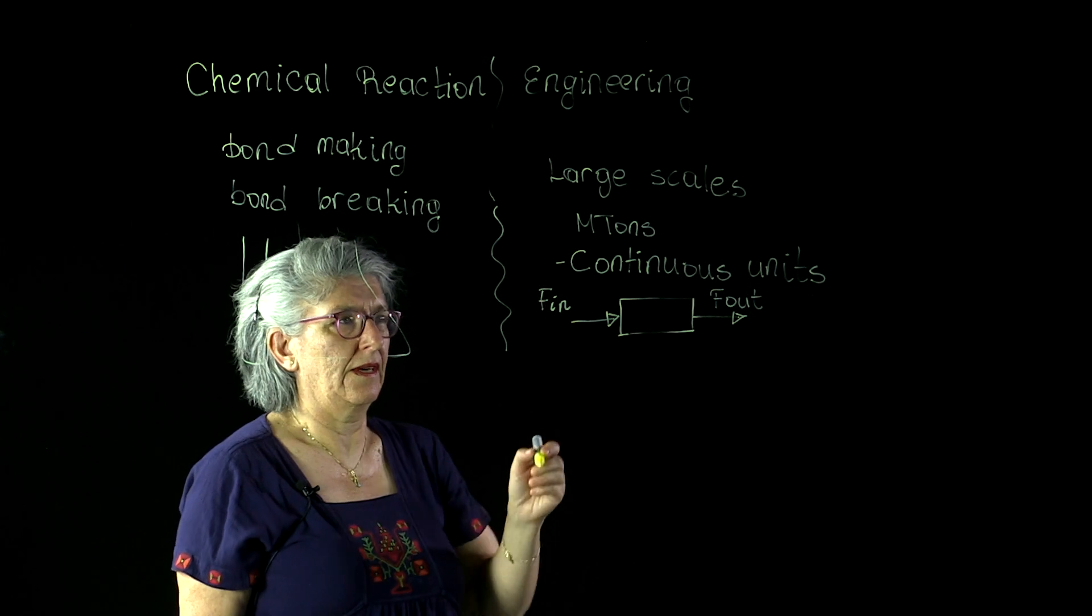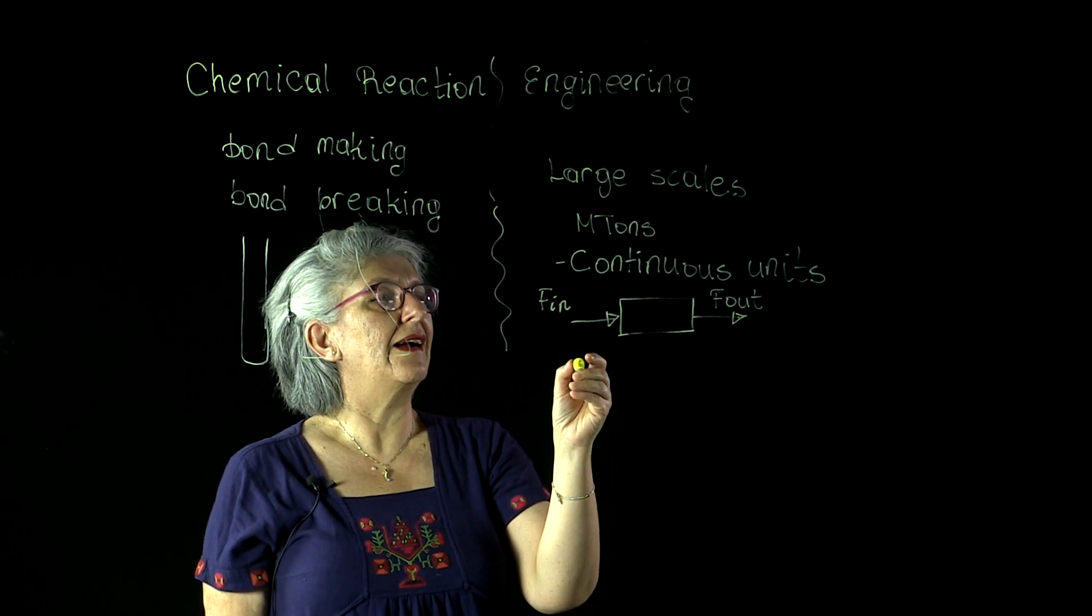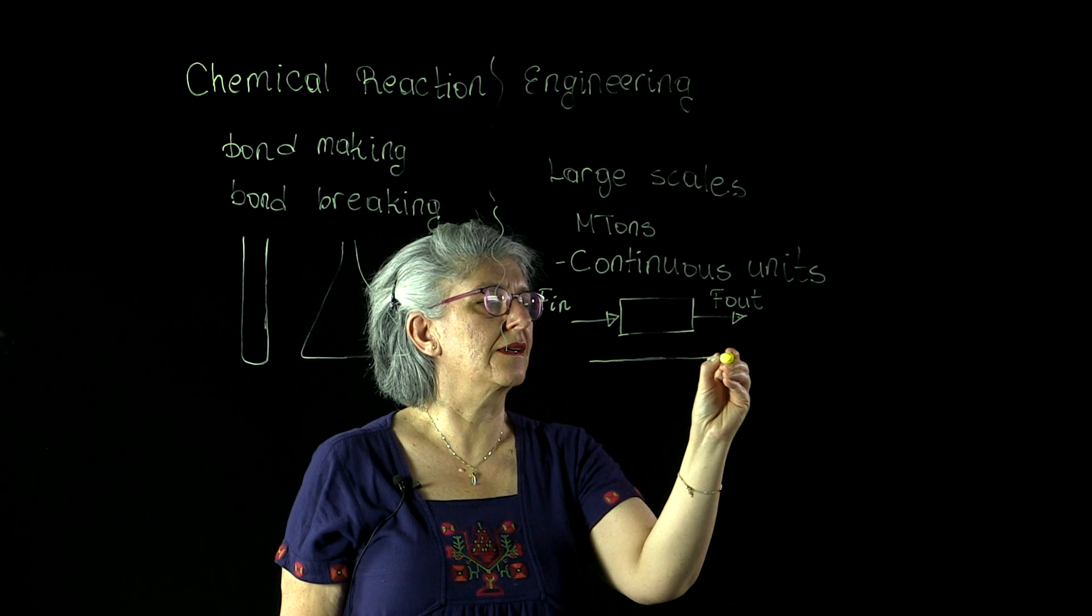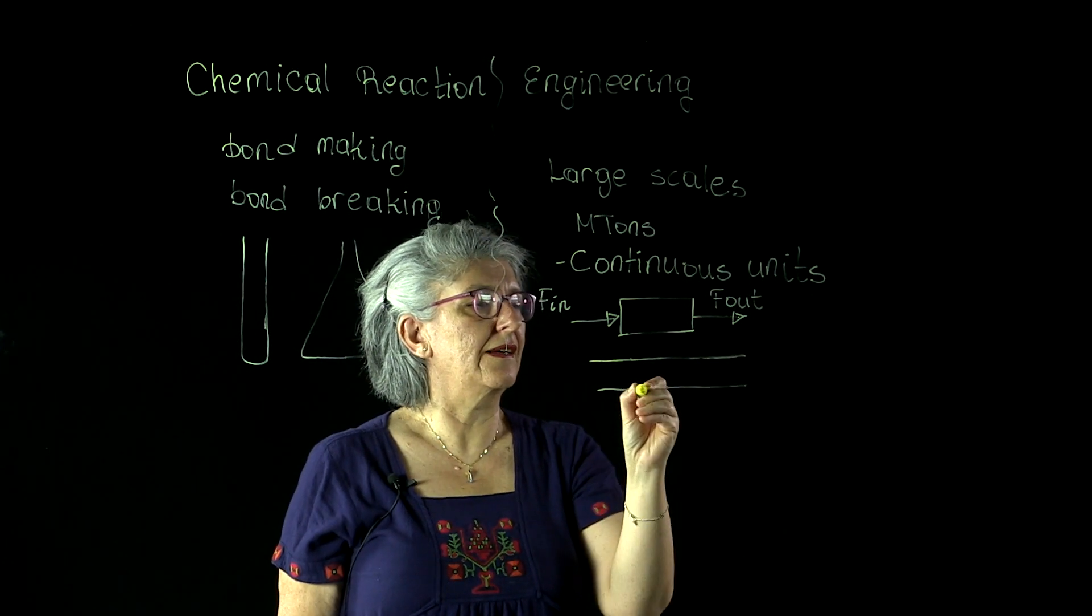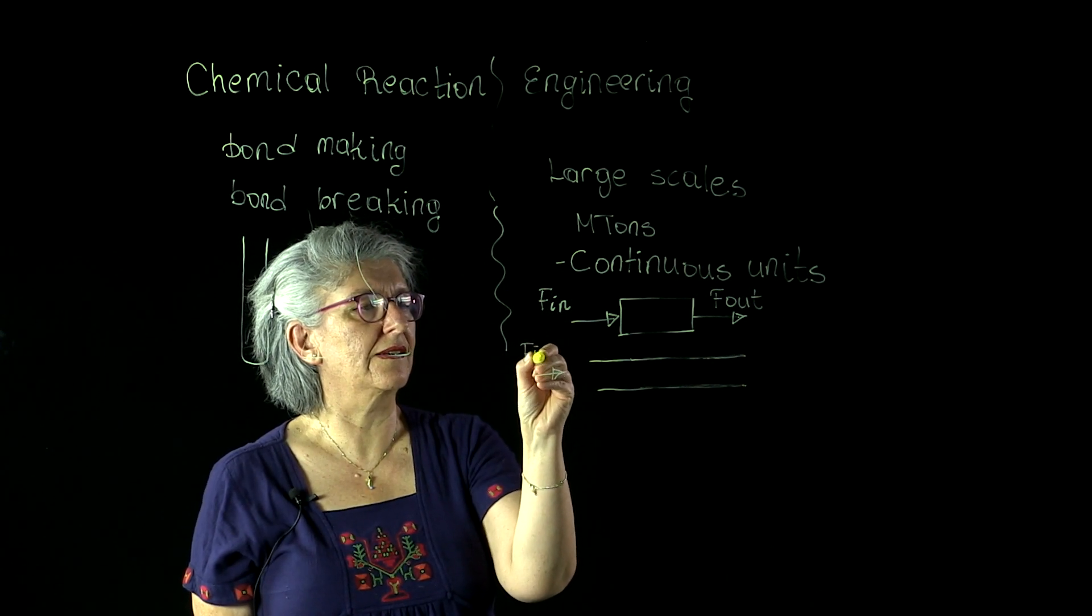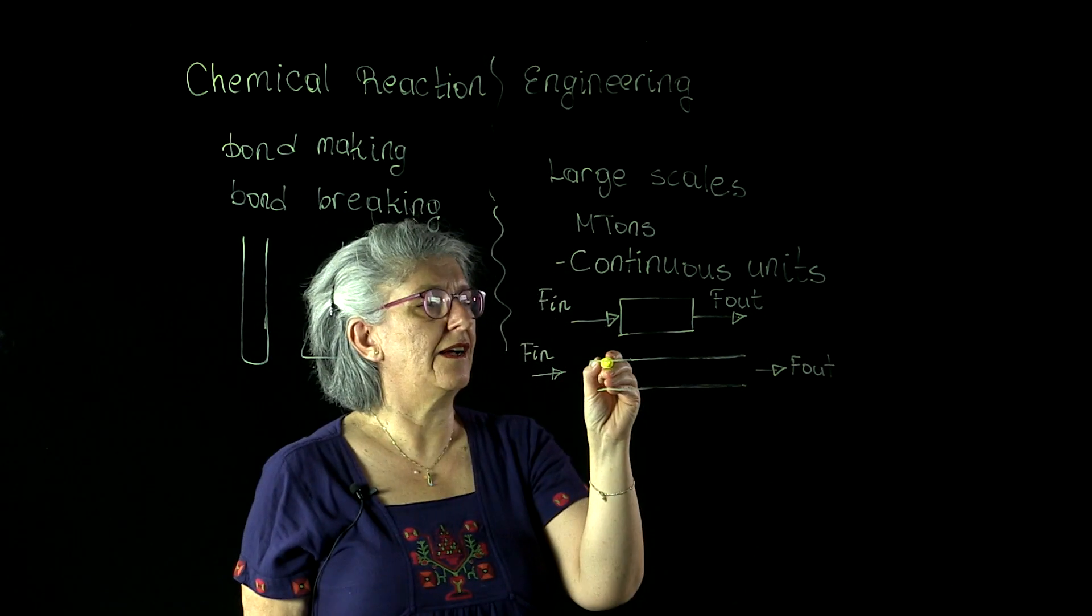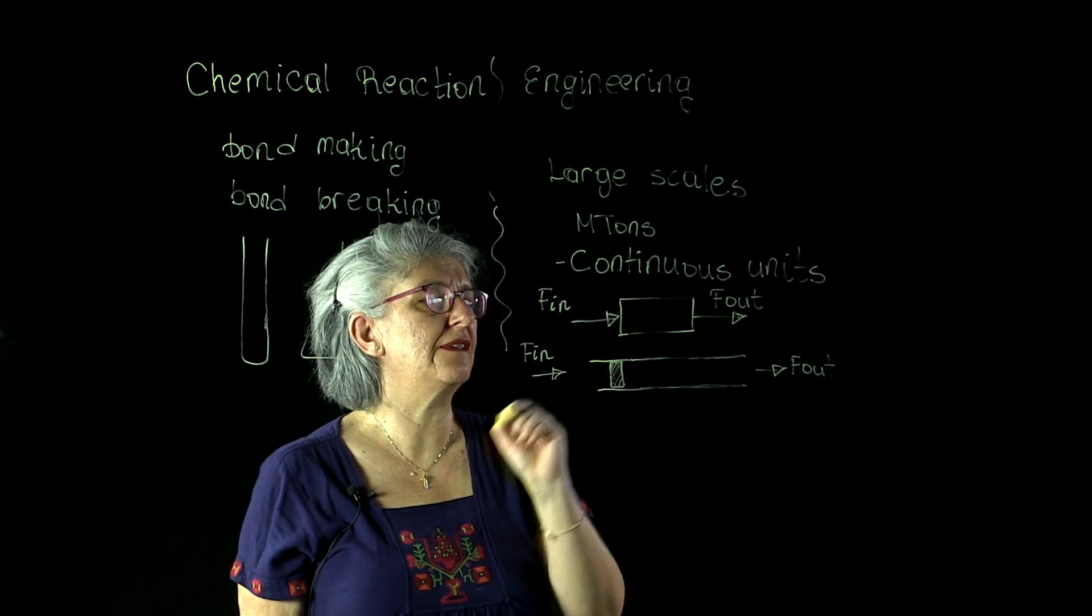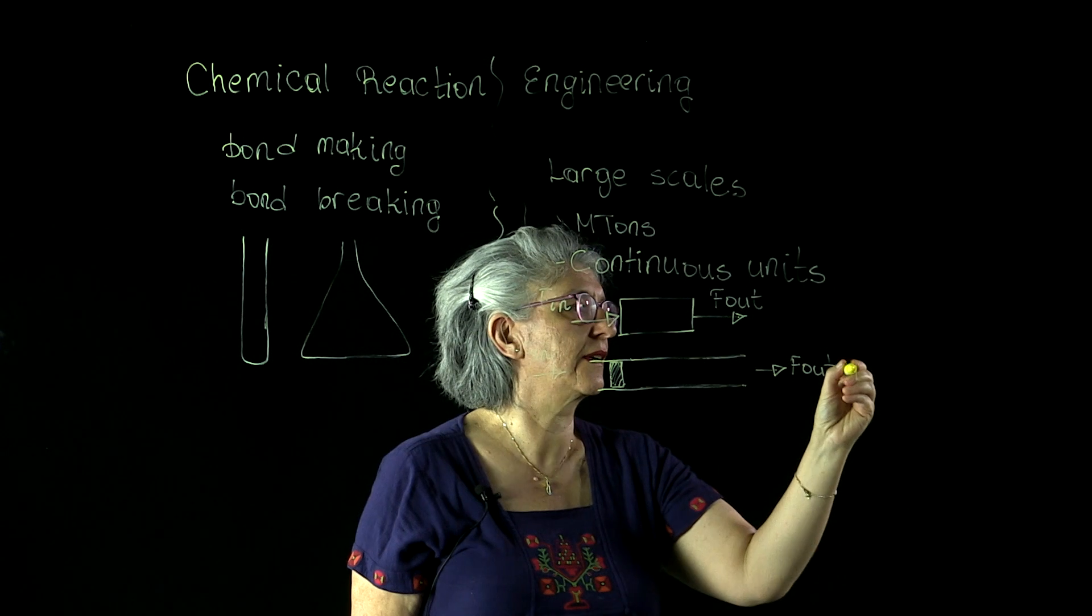Those continuous units are in an undergraduate chemical reaction engineering course classified as plug flow reactors, where we have a tubular domain where feed enters and the product leaves, and we have no radial mixing in the reactor. The fluid package moves in the reactor as if it were a plug. So this is the plug flow reactor, PFR.